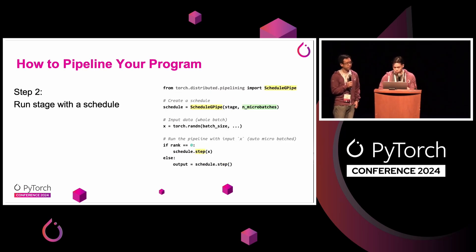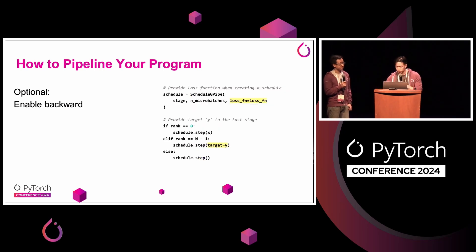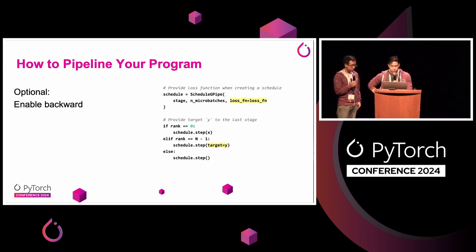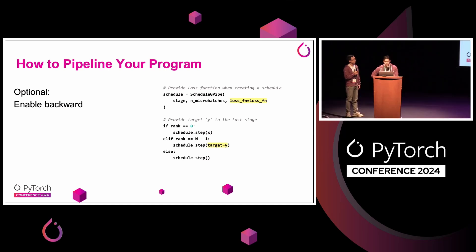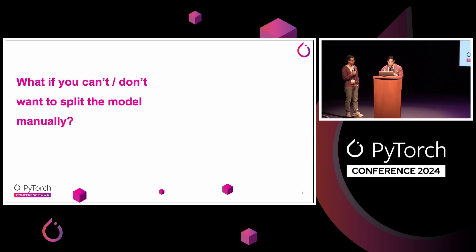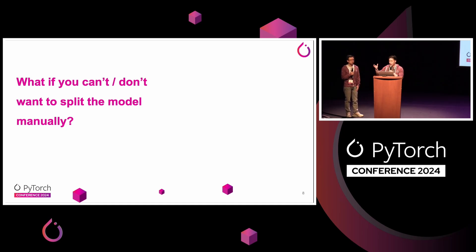This is for the forward pass. We can also enable the backward pass by passing in the loss function into the schedule constructor. Similarly, for the last stage, we have to pass in the target values in order to compute that loss. So to recap, we have pipeline stages and pipeline schedules — the schedules take in the stages.